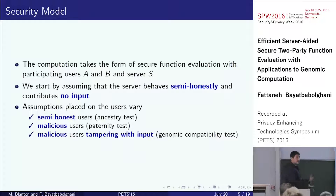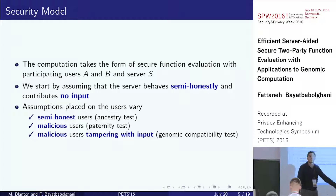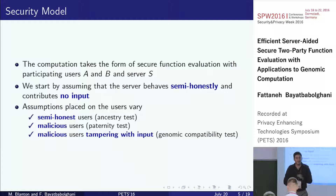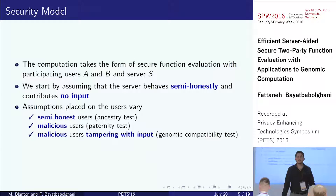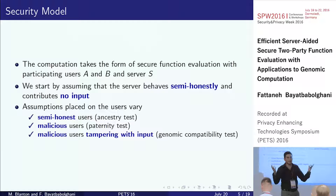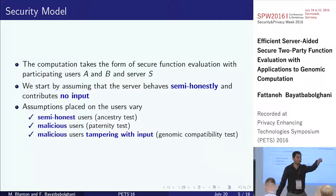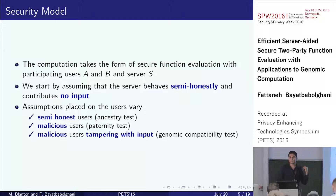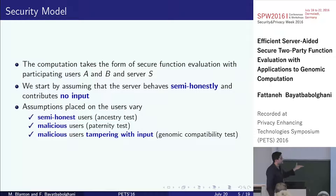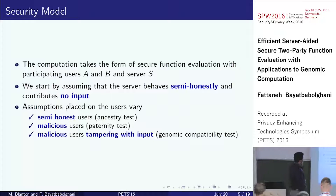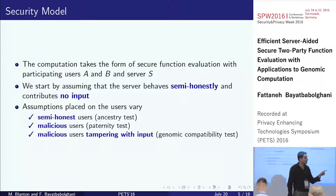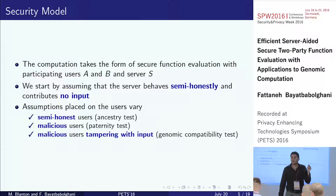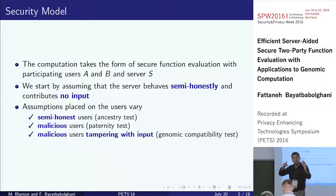For paternity, malicious is appropriate — if you watch those shows where someone dances when they're not the father, that explains wanting to change the result. For genomic compatibility, malicious is also justified because I could pretend to have early signs of Alzheimer's to figure out whether you have it too. If the answer is yes, I learn something about your genome. So here you must assume malicious parties who may tamper with their inputs.